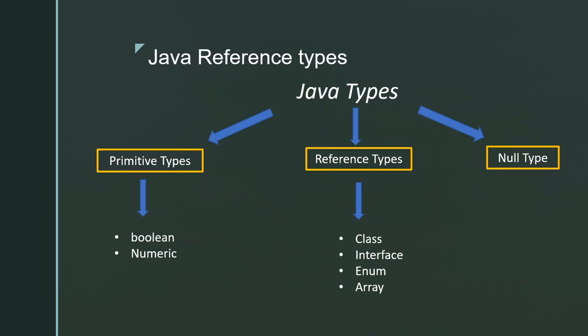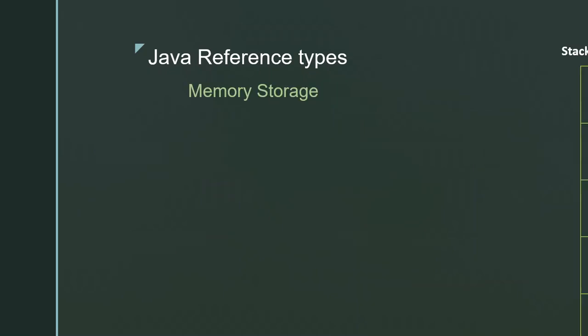Reference type refers to an object — an instance of a class. For example, you can refer to an interface, enum, or array. So what's the main difference between primitive types and reference types?